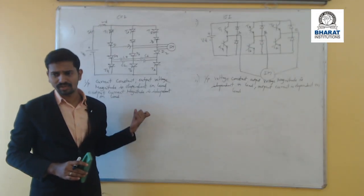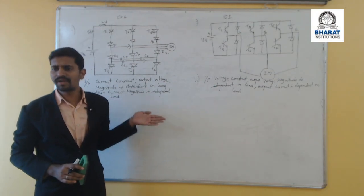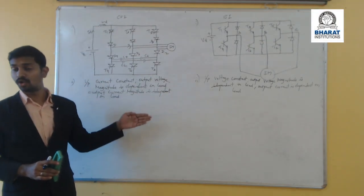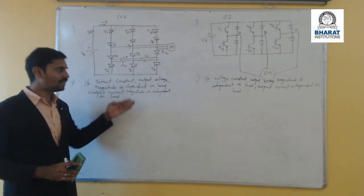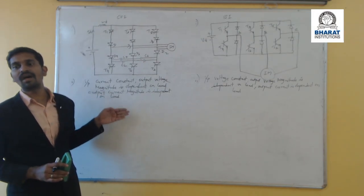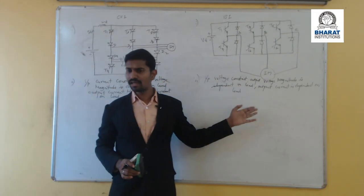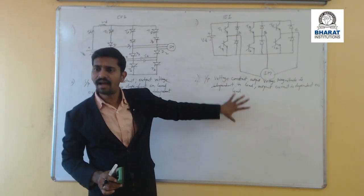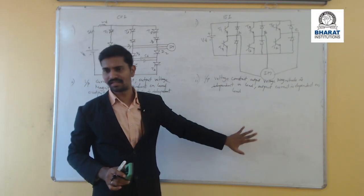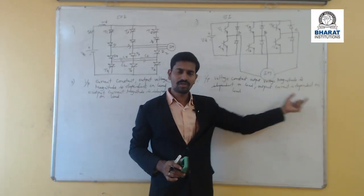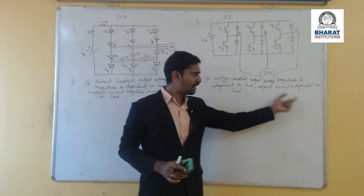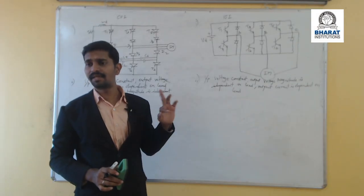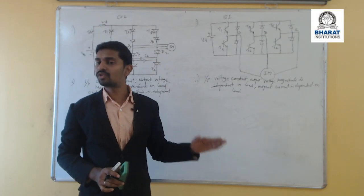In current source inverters, the input current is maintained constant. The output voltage magnitude is dependent on load, but the output current magnitude is independent of load. For voltage source inverters, the input voltage is kept constant. The output voltage magnitude is independent of load, but the output current magnitude is dependent on load.